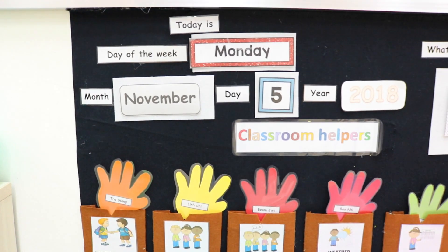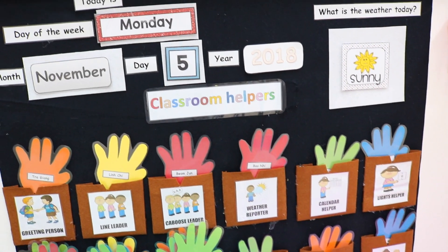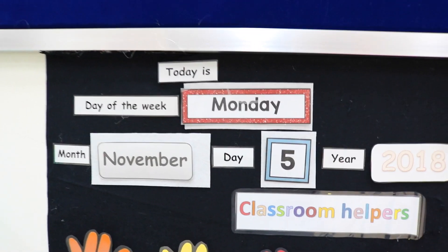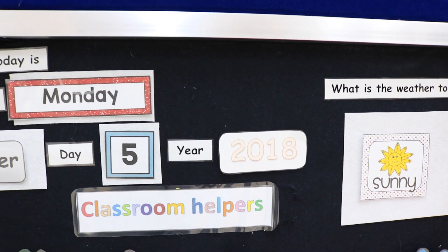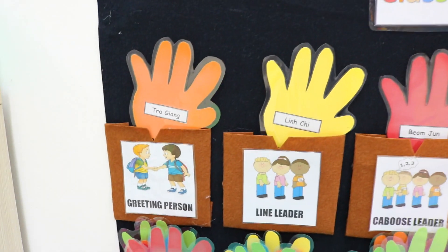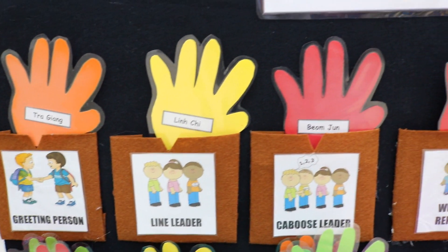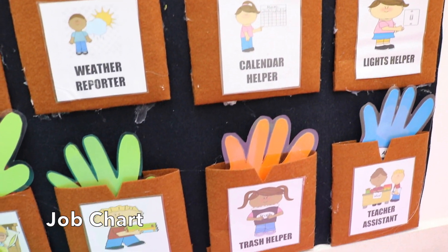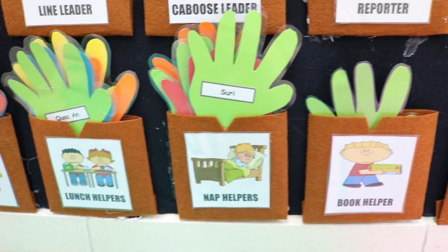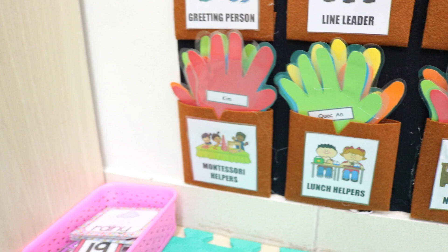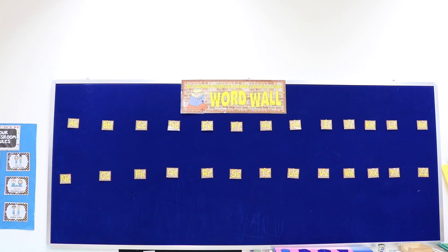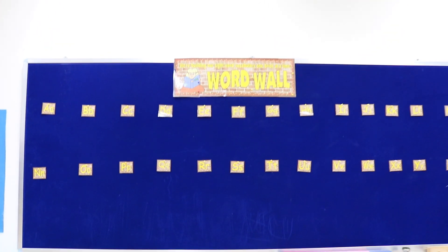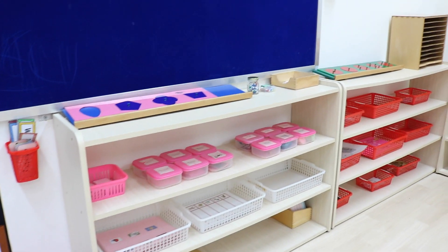So down here, this is actually my classroom helpers board. Aside from doing our word of the day, we also have a good morning song and what's the weather today. This is actually one way to boost their confidence — I call up one kid to come up and help me sing the song and figure out what day it is today. This is a classroom helper chart. As you can see, this actually helps them learn their responsibilities and gives them a positive experience. I want them to feel special — that they're actually contributing to the classroom community.